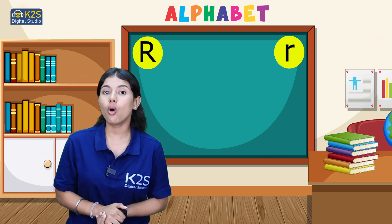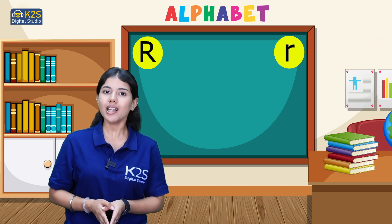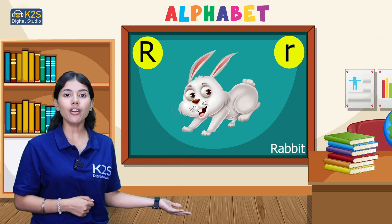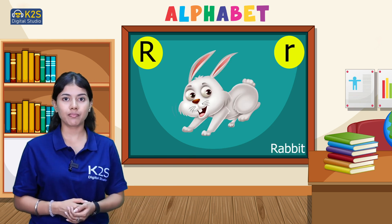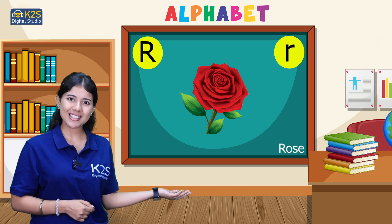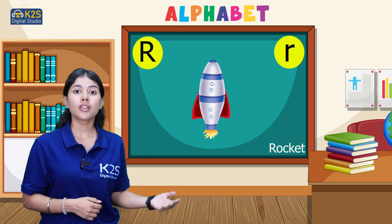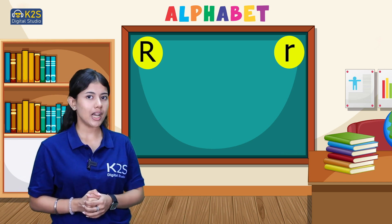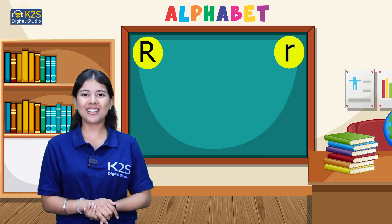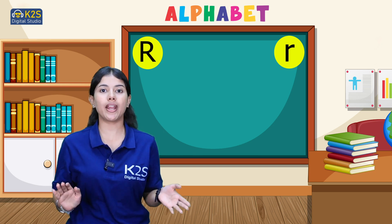So here we go with our four words which start with letter R. Let's revise them. First, R for Rabbit. Second, R for Rose. Third, R for Rocket. And the last is R for Rainbow. Clap for yourself — you are absolutely great!